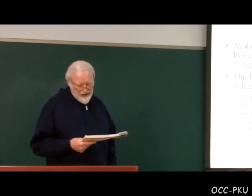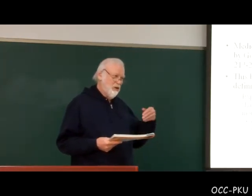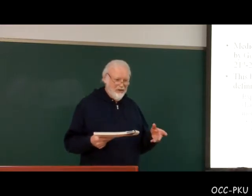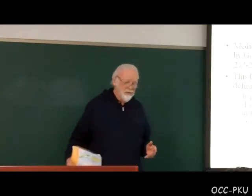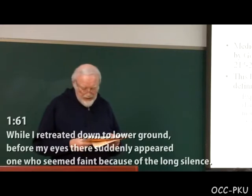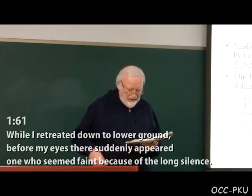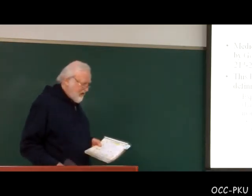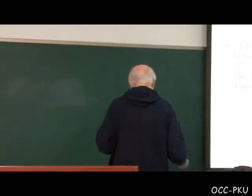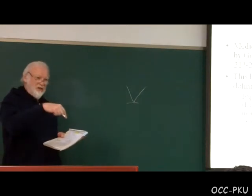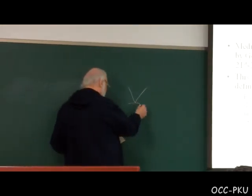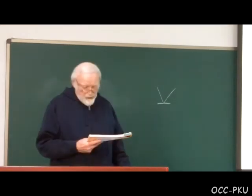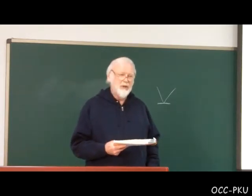'While I retreated down to lower ground' — the Italian says rovinava, you can see the word 'ruin' there. It's not a careful retreat; it's being thrown back and down. 'While I retreated down to lower ground, before my eyes there suddenly appeared one who seemed faint because of the long silence.' As I said last time, this is the nadir, the low point of Dante's journey. And just at this point, divine grace intervenes — God helps Dante by sending Virgil.